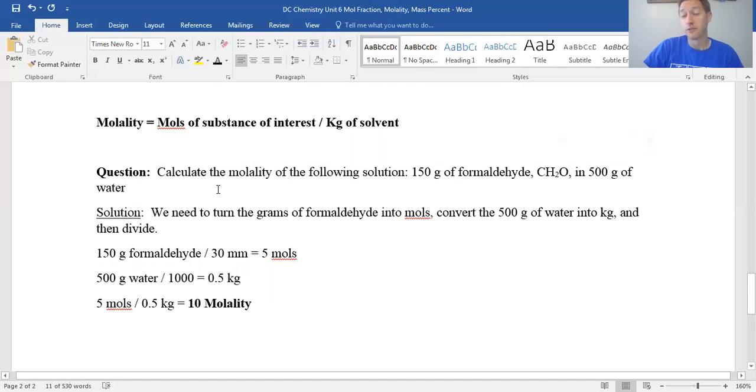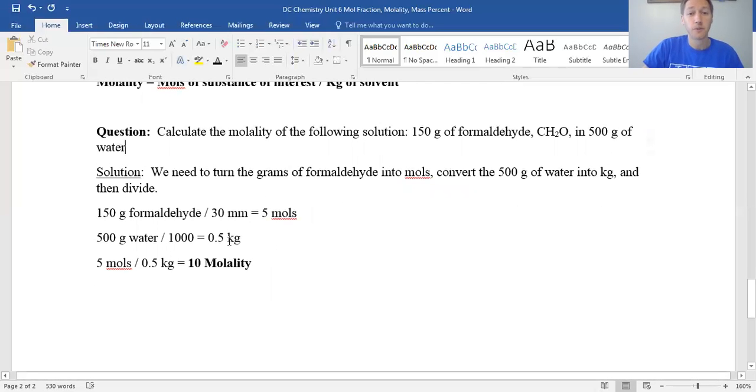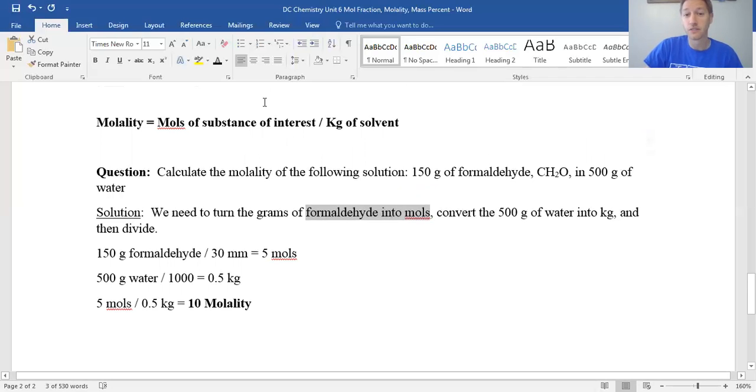So you might do this kind of calculation if you're like preparing some animals for being dissected. Every time you buy some animals that are going to be dissected for biology class, they smell. It's probably formaldehyde in large quantities. We're going to turn those grams formaldehyde into moles, because molality is moles divided by kilograms. You got to turn the solvent into kilograms, and then we can just divide. So, 150 grams formaldehyde, molar mass is 30, because we have one carbon for 12, two hydrogens for two, and the oxygen is 16. We have five moles. Turn the 500 grams of water into kilograms by dividing by 1,000, 0.5 kilograms. Five moles in 0.5 kilograms. That is 10 molality solution.